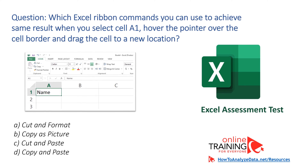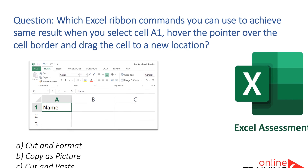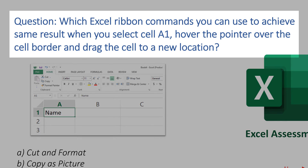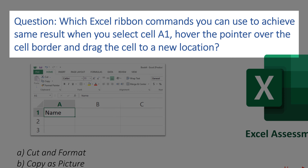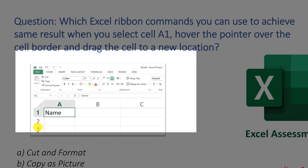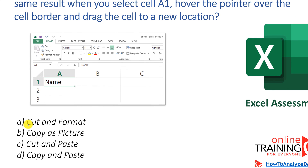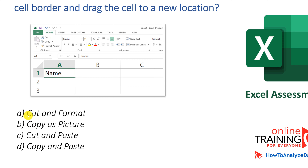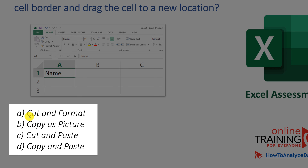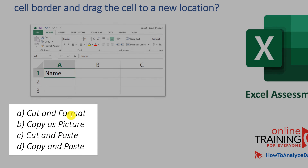Here is a typical question which tests your knowledge of Excel ribbon commands. Which Excel ribbon commands can you use to achieve the same results when you select cell A1, hover the pointer over the cell border, and drag the cell to a new location? You are presented with a screen where cell A1 has a text value of 'name', and there are four choices: cut and format, copy as picture, cut and paste, or copy and paste. Which one would you choose?